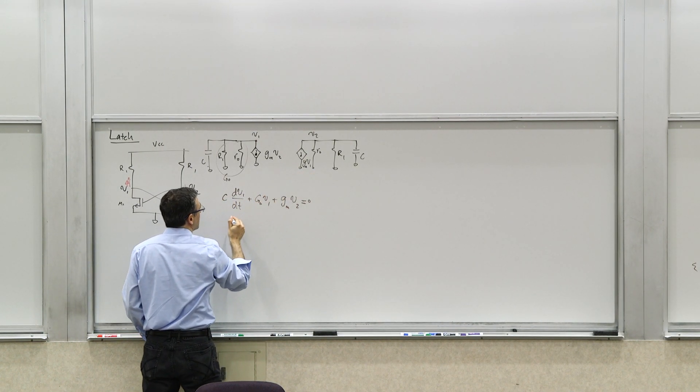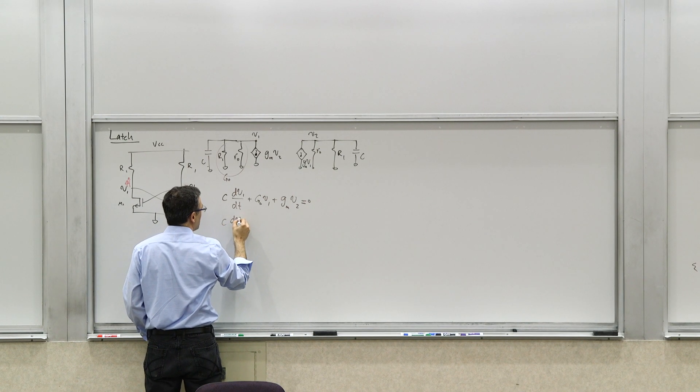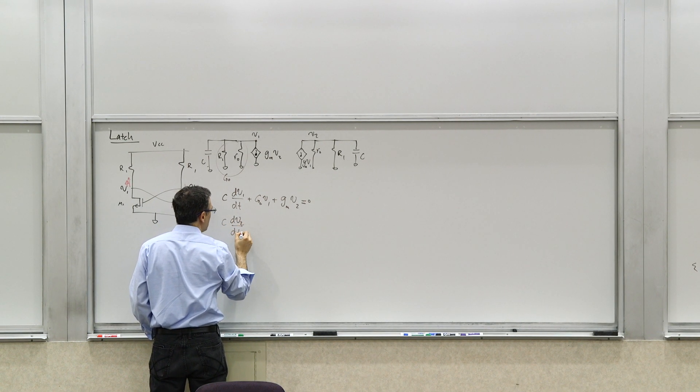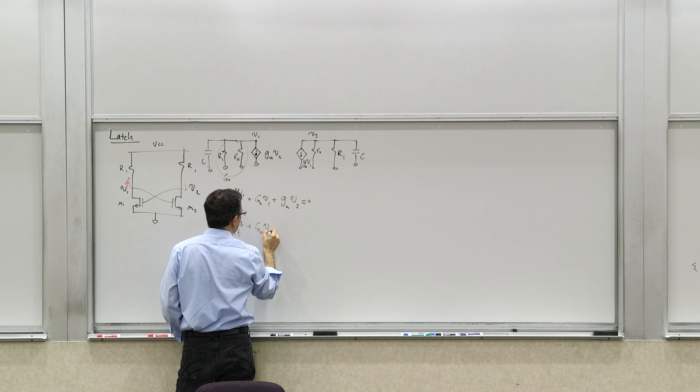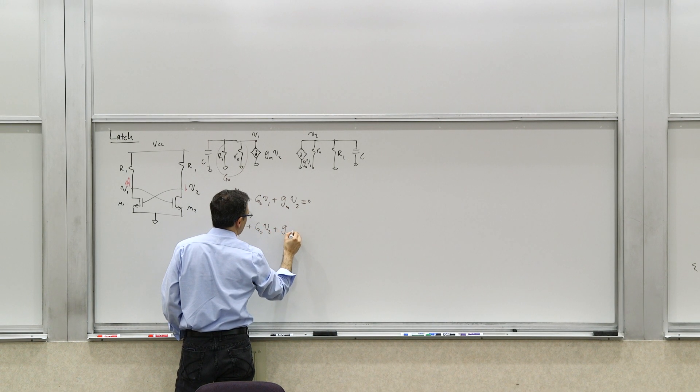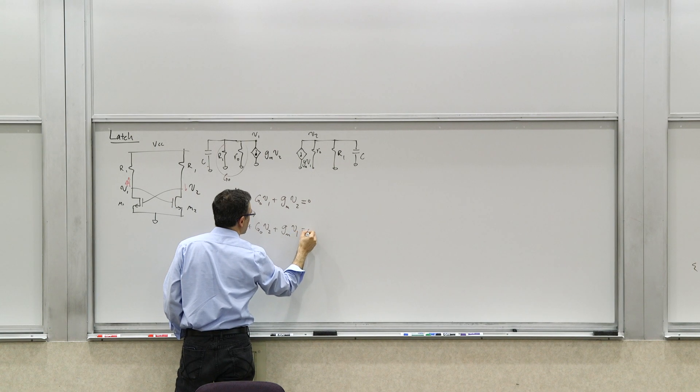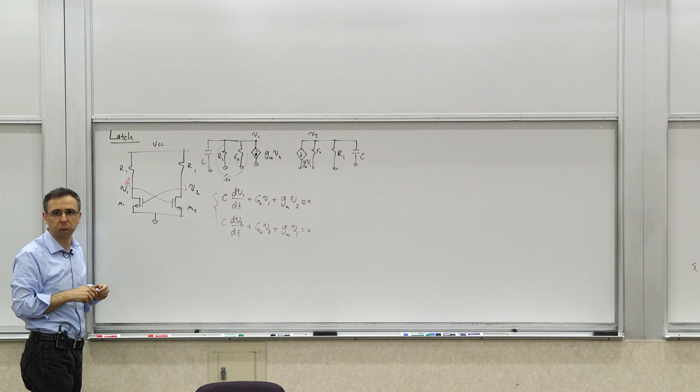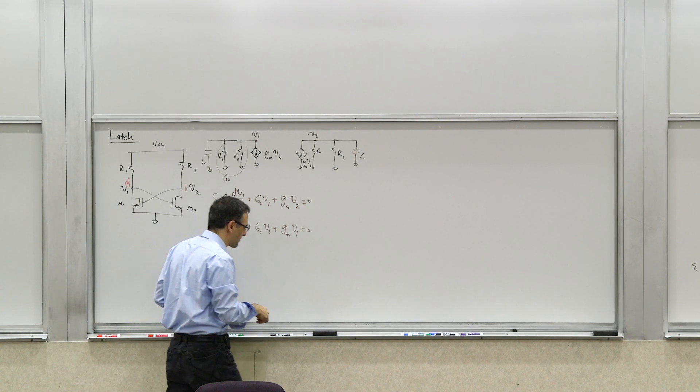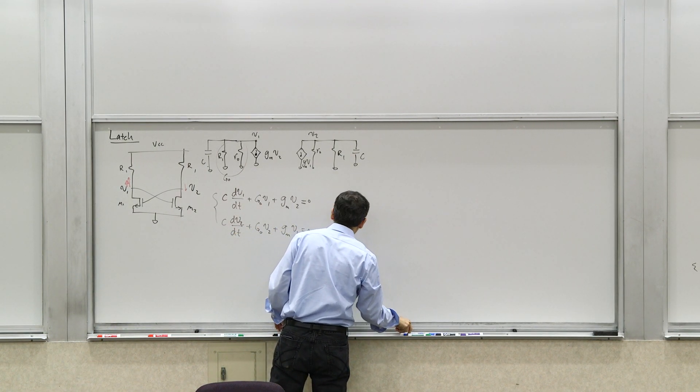Now we are assuming that GM1 and GM2 are the same here. And similarly, for this node, you can write a similar differential equation. This would be dV2 dt, that's the current through the capacitor, plus the current through the resistors, plus the current source itself. So you have a pair of coupled differential equations, which is not that surprising.